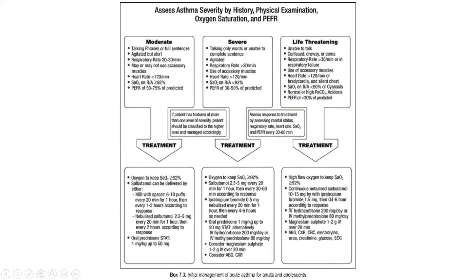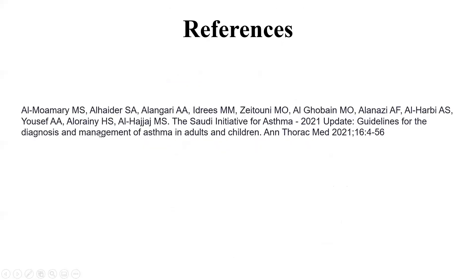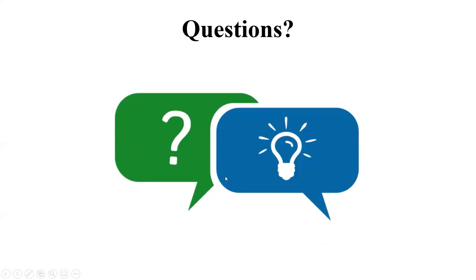When it gets life-threatening, you must not only do the previous interventions but also perform an ABG to check for respiratory acidosis. The reference for this lecture is SENA. If you have any questions, feel free to ask. Thank you very much.